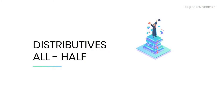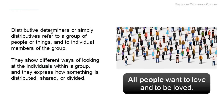Hello, welcome to this tutorial. Today we are going to talk about distributives: all and half. Distributive determiners, or simply distributives, refer to a group of people or things and to individual members of the group. They show different ways of looking at the individual within the group, and they express how something is distributed, shared, or divided.